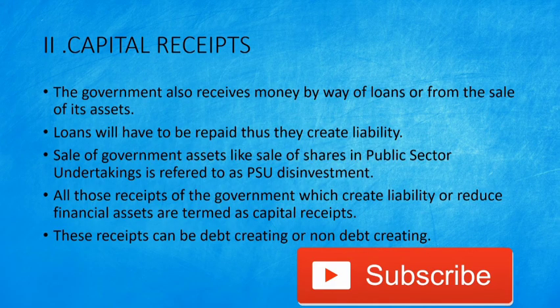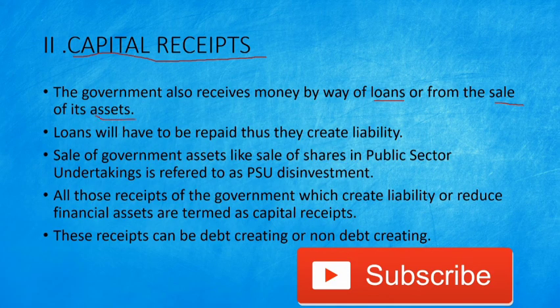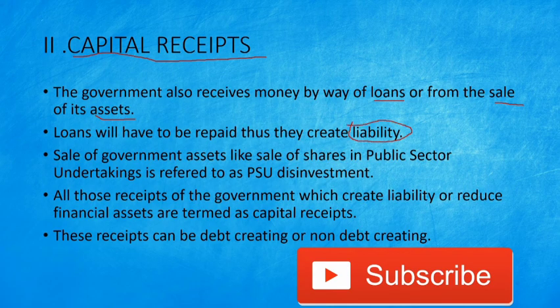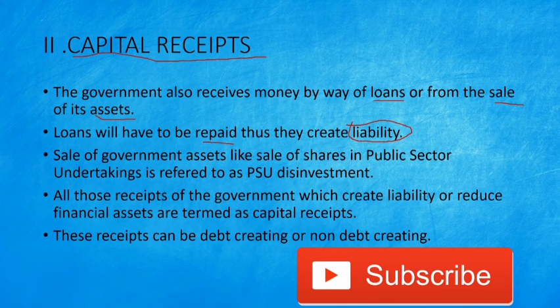That was all about revenue receipts. Now we shall see capital receipts. The government can receive money by way of loans or from the sale of assets. If a loan is taken, it definitely has to be repaid — which means it creates a liability. A liability is a responsibility. Whatever loans the government has received, it has to repay — that is what creates a liability.